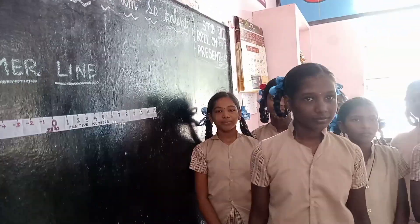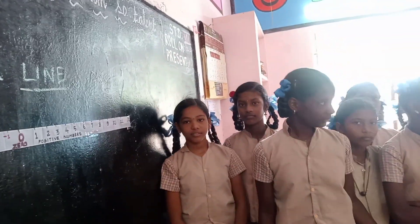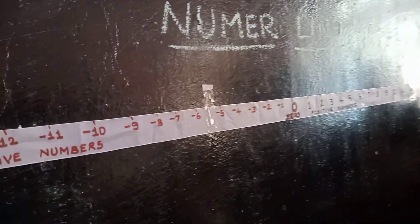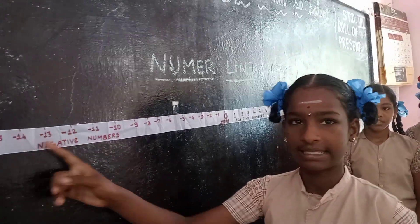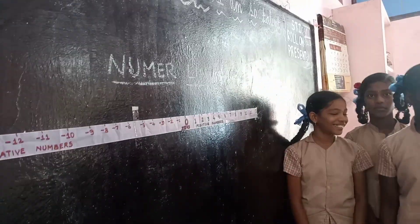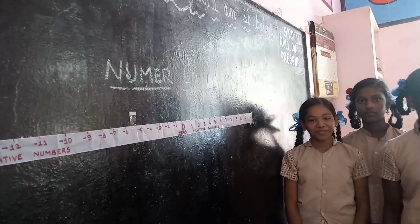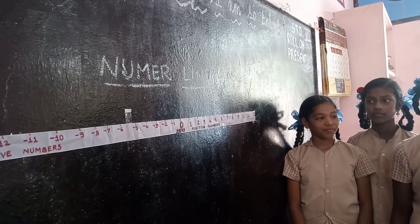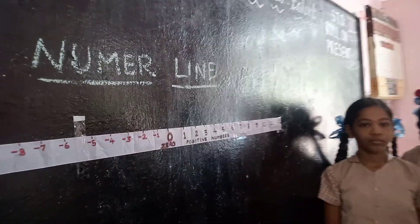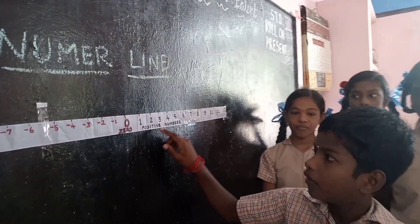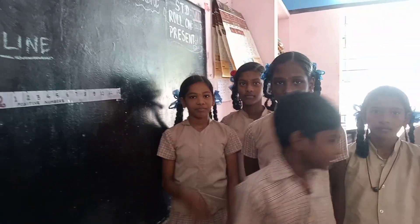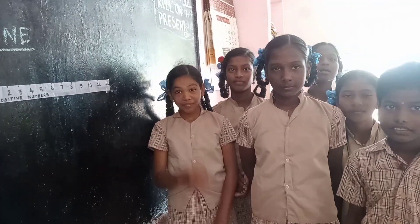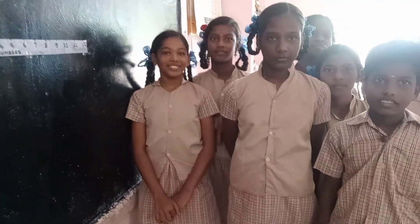Very good. What happens to the value of numbers while moving to the left on the number line? The value of numbers is decreasing. Yes, very good. What happens to the value of numbers while moving to the right on the number line? The value of numbers is increasing. Yes, very good. Children, you have all given very nice answers.